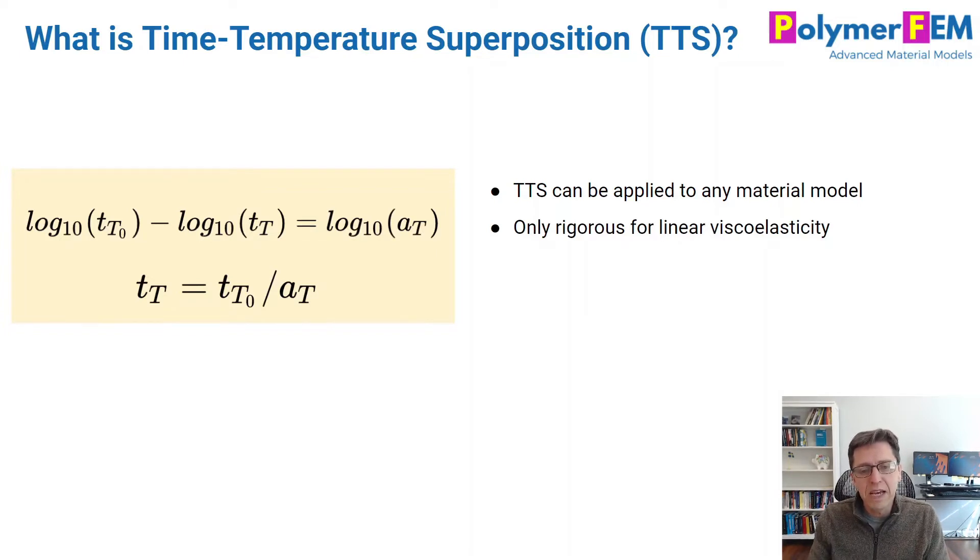What I mean by that is that linear viscoelasticity is a material that really all the relaxation response and the viscous response can be captured by this Prony series, which is a way to describe the amount of relaxation that occurs.